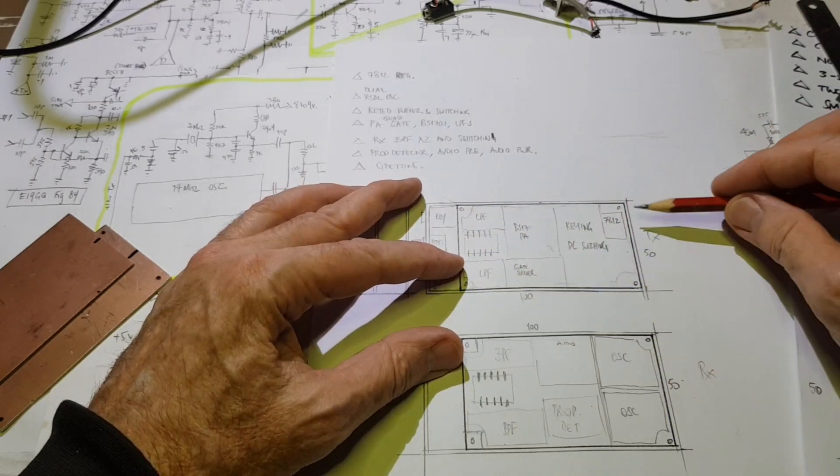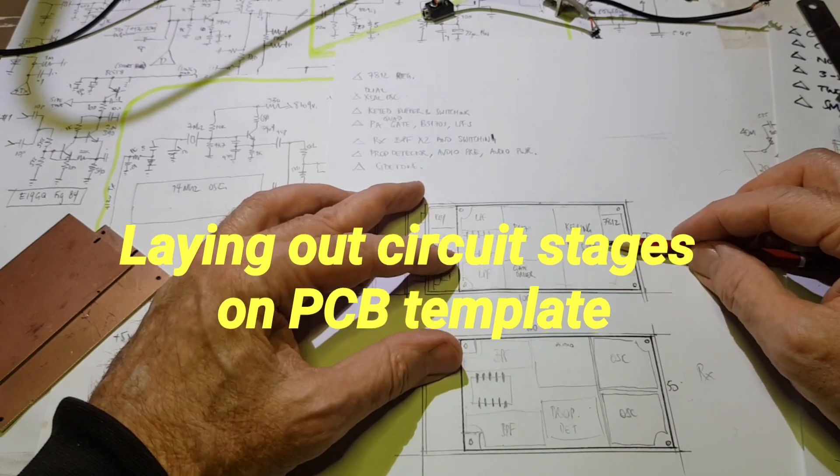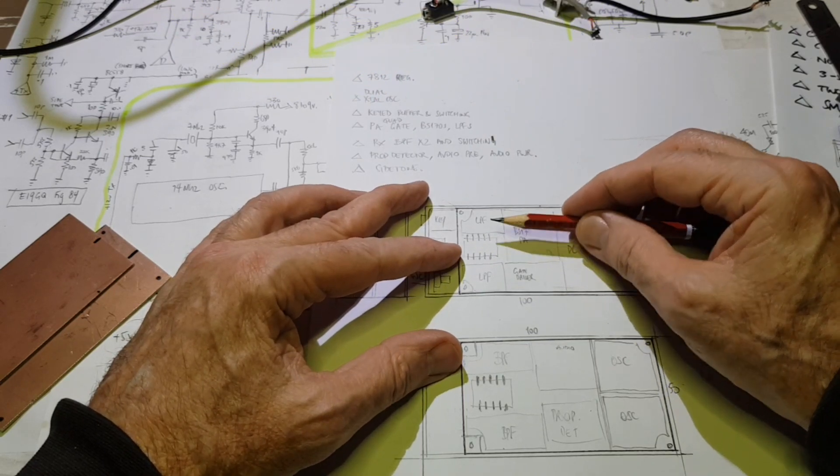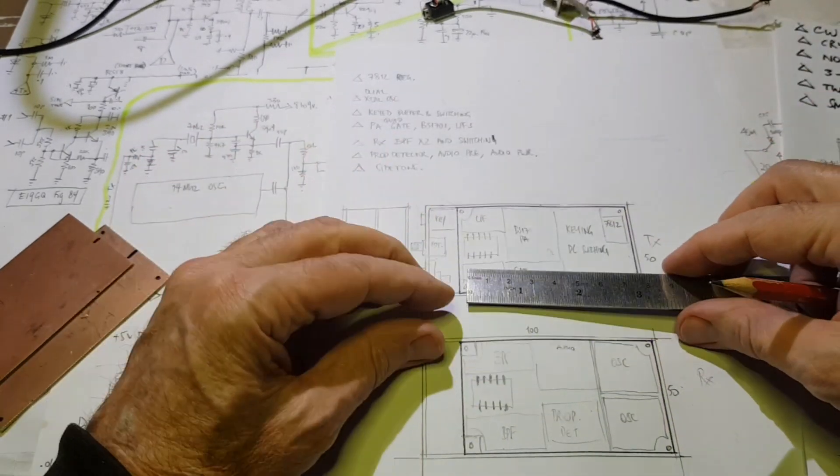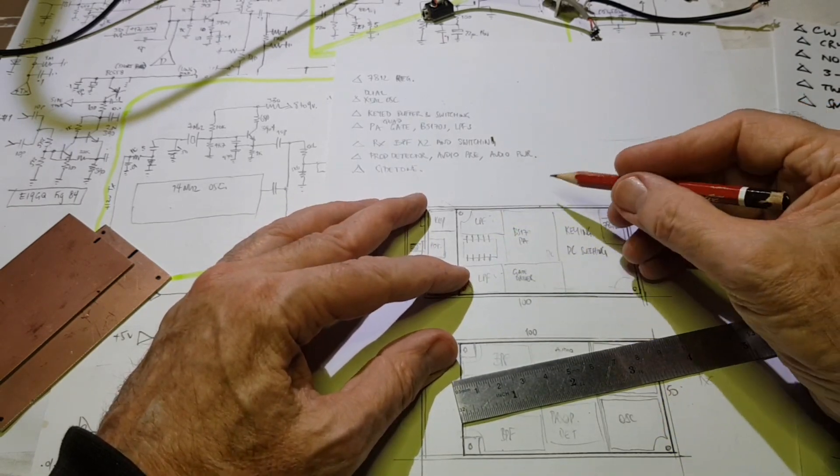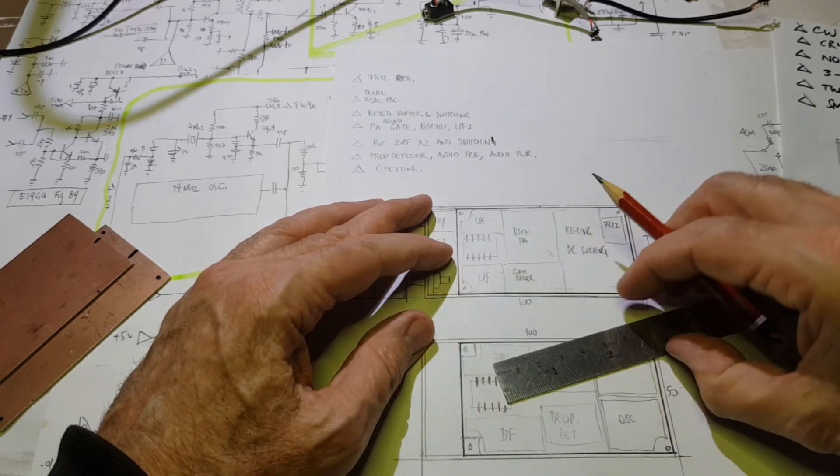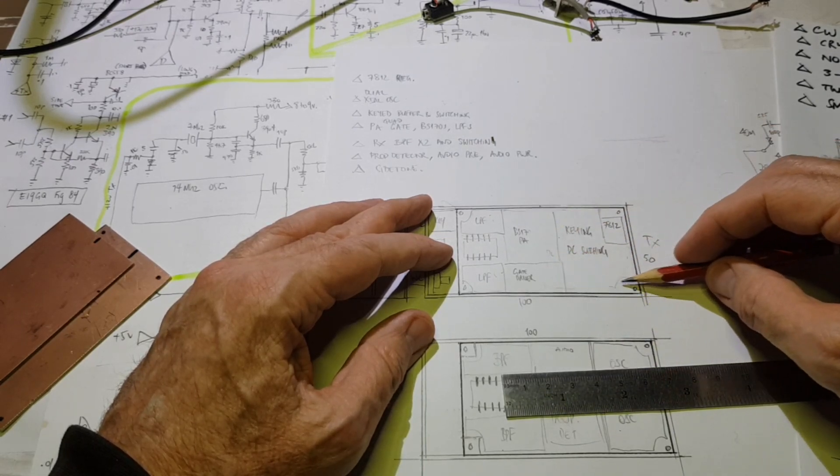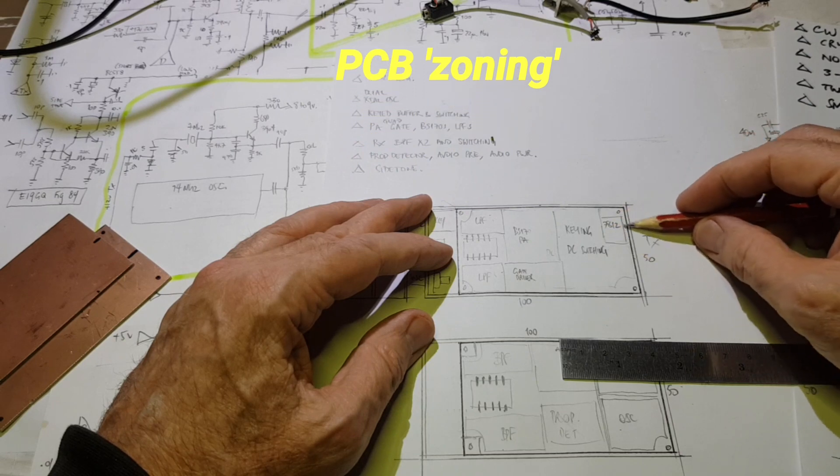The challenge is can I get all those transmitter parts onto this area of board? I figure if I switch with one two-pole relay, two low-pass filters, I've got about 22mm to fit in the two low-pass filters. The BS170 PA and gate driver could fill this area, about 25mm. Then I've got this area for the keying circuit and DC switching circuit, about 30mm. I can probably get a 7812 regulator up there.